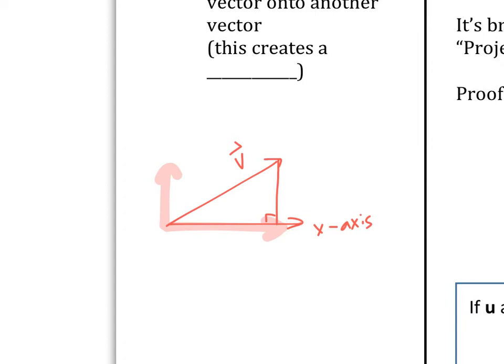I'm going to try one more way. Our professor in college showed us this — it was very confusing at first. Let's say this ruler is the vector. How much of this ruler is going in the x direction? Basically, it's like if you shine a flashlight from the top straight down — the question is, where is the shadow? If you shine the light straight down it's going to hit this ruler and cast a shadow on the floor. The shadow is only as long as this part. The projection vector is the shadow.